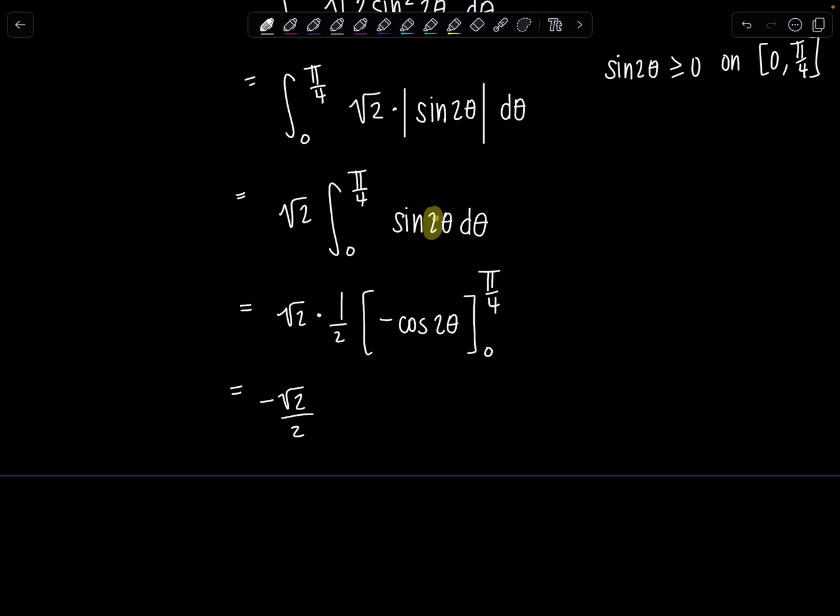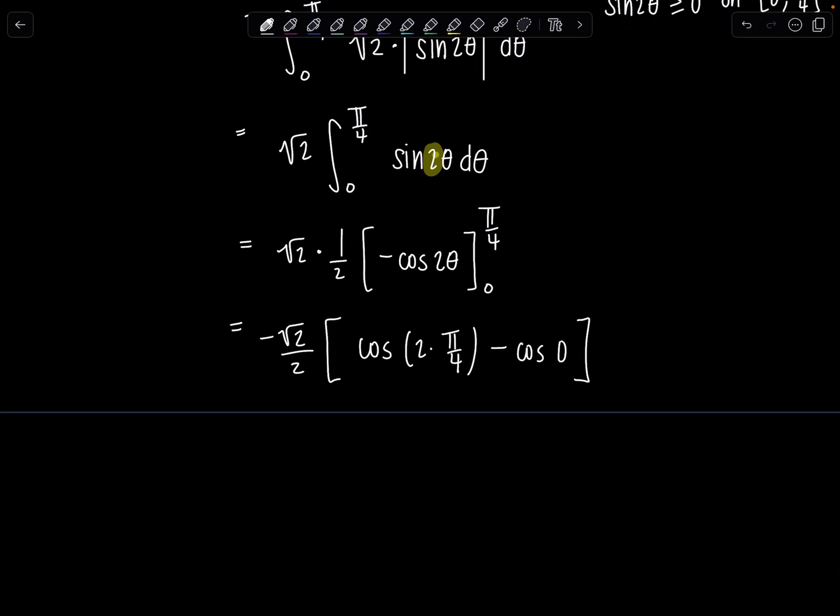I'm just going to take the negative outside as well. So, I have negative √2 over 2 times cosine of 2 times π/4 minus cosine of 2 times 0, which is 0. Cosine of 2 times π/4, that's cosine of π/2. So, this is just 0 minus cosine of 0 is 1. And then I have that negative √2 over 2 sitting out here. So, negative √2 over 2 times negative 1 gives me positive √2 over 2.